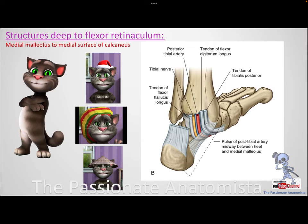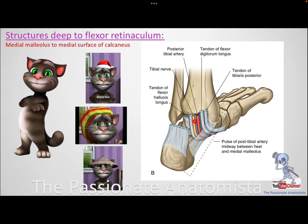Now let's discuss the structures deep to the flexor and extensor retinaculum. The flexor retinaculum is a fibrous connective tissue connecting the medial malleolus to the calcaneus on the medial aspect. It retains the tendons of the flexor muscles. The order of tendons behind the medial malleolus from medial to lateral can be remembered as: Tom Does Hats — Tibialis posterior, flexor Digitorum longus, and flexor Hallucis longus.